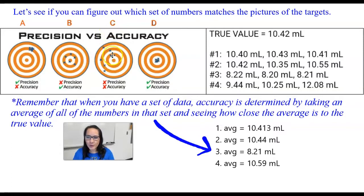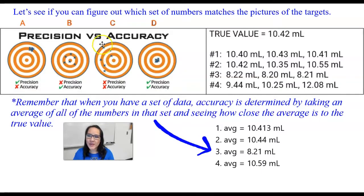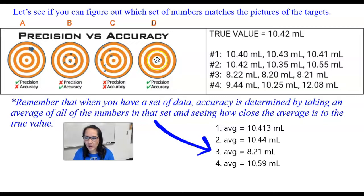In target C, we're going to be both not precise and not accurate. Not hitting near the same spot over and over again means not precise, and the average distance of these is not going to be close to the bullseye. And then finally, target D — these all hit the bullseye over and over again, so they're precise and they're accurate.